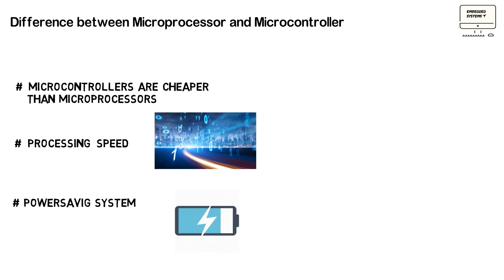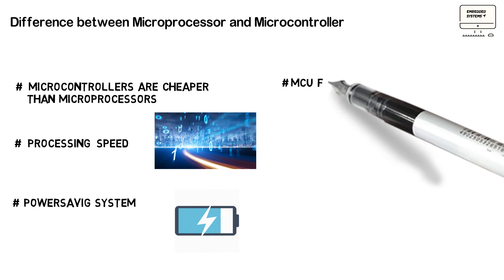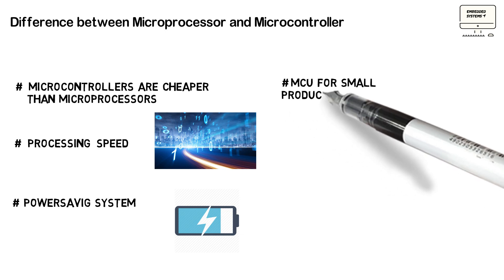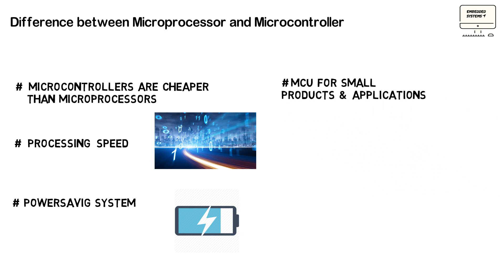Another important difference is the power saving system. Generally, microcontrollers have features like power saving mode or deep sleep mode, so overall they use less power. Microprocessors generally have no power saving system. Also, microcontrollers are compact, so they are suited to small products and applications.